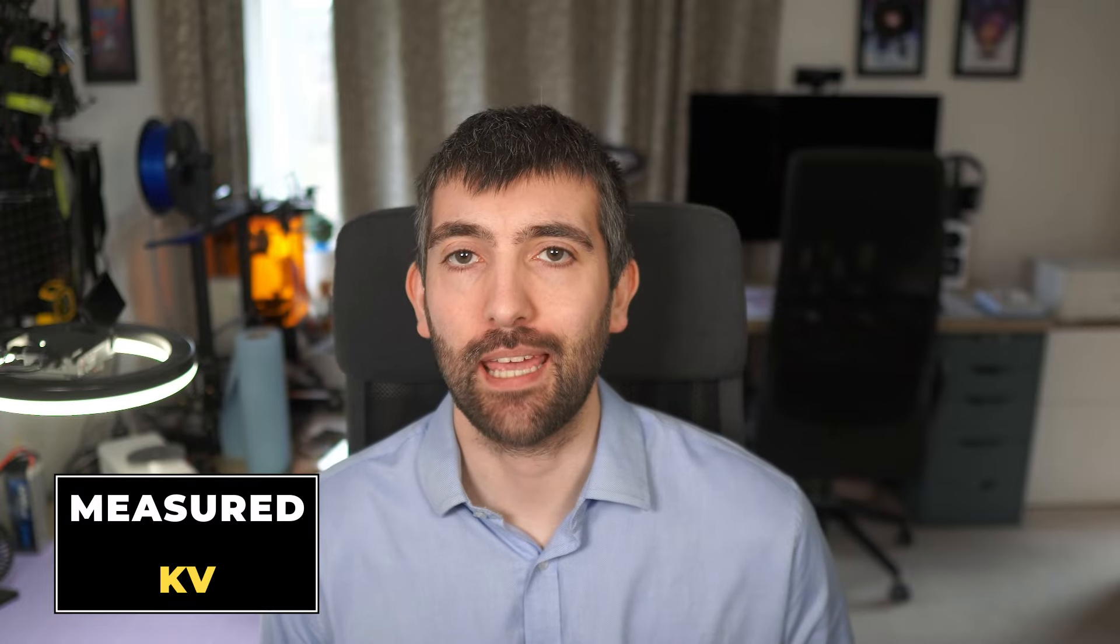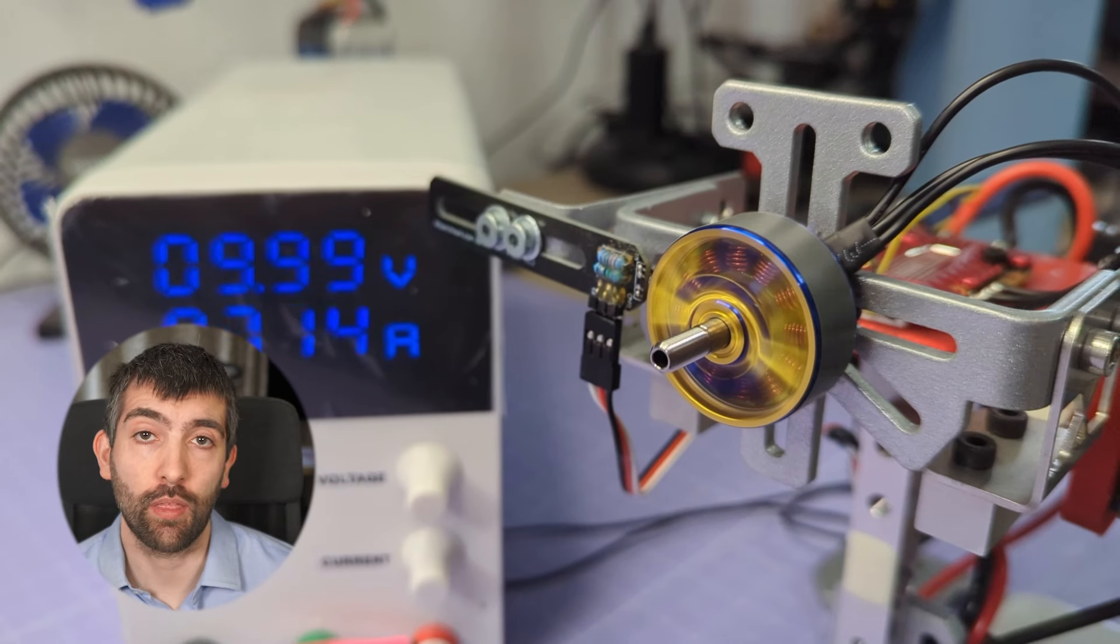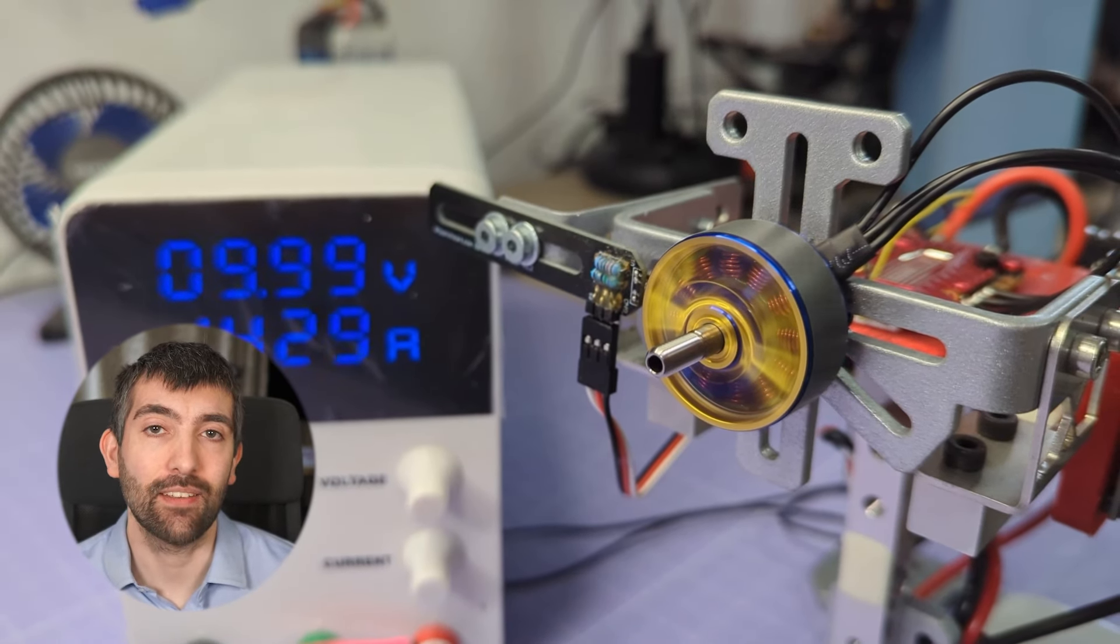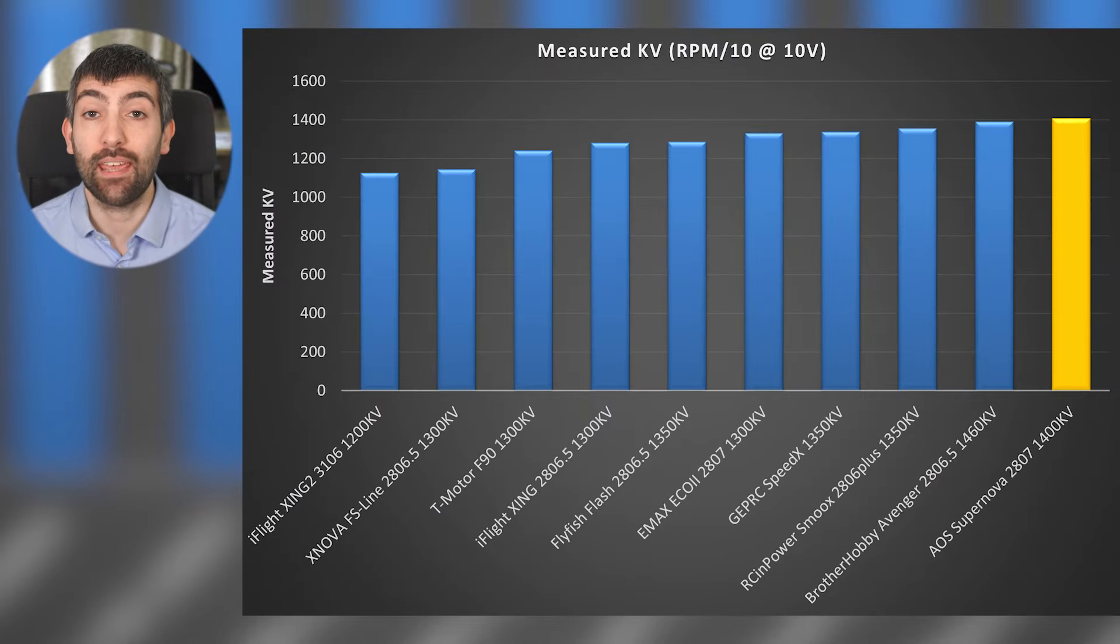We're going to start by looking at measured kV, and I measure kV by driving the motor full throttle at 10 volts and then recording the RPM with an optical RPM sensor. Divide that optical RPM by 10 gives the kV in RPM per volt.